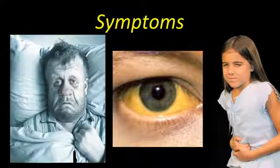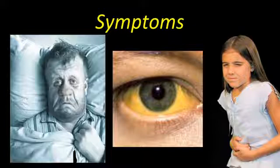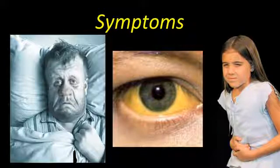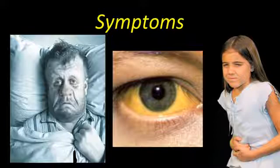Other symptoms may include nausea, vomiting, abdominal pain and jaundice — which is yellow discoloration of the skin and eye — which may mean that the infection has spread to the liver.